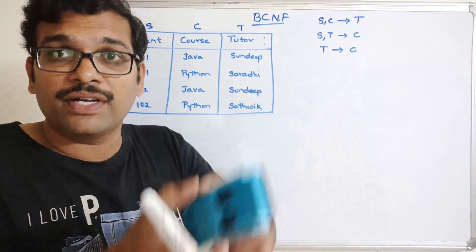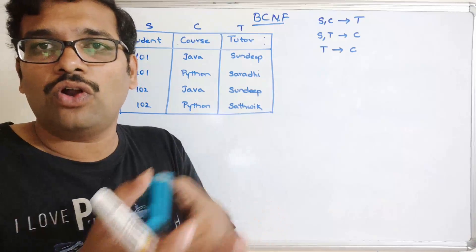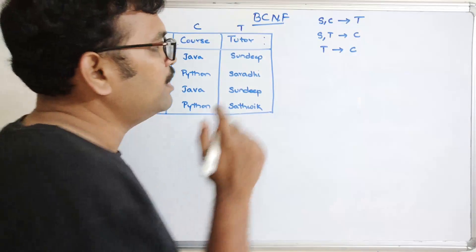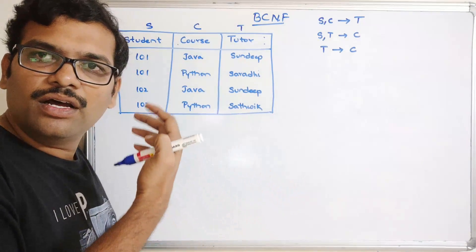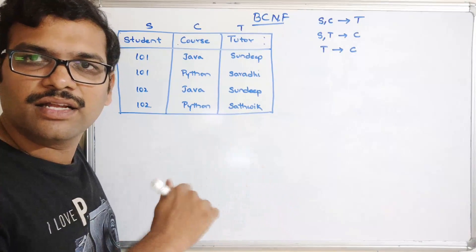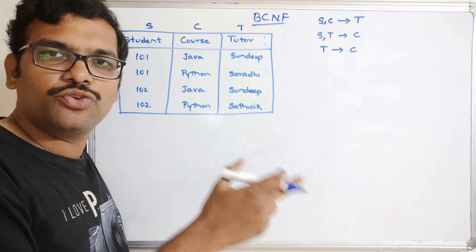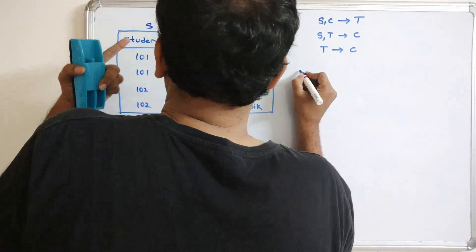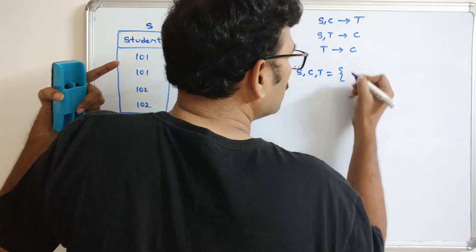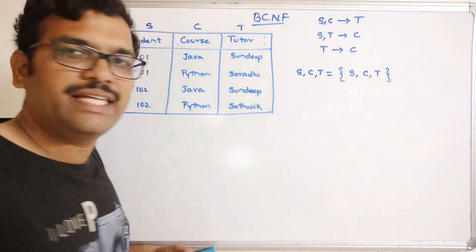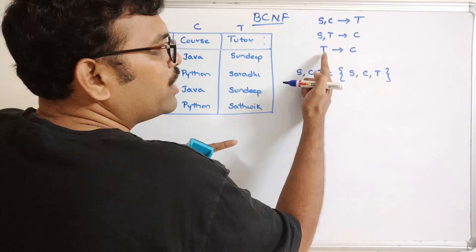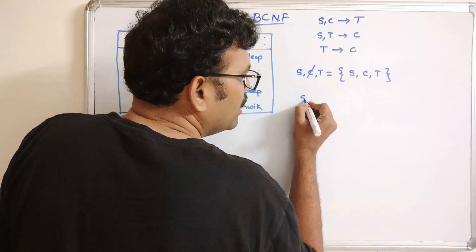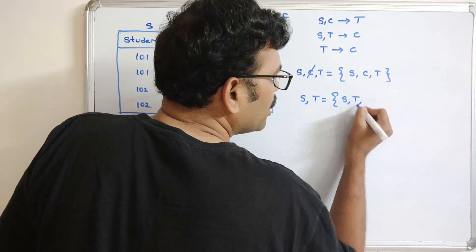For 3NF, for all non-prime attributes there should be no transitive functional dependency. To check this we need to find the candidate keys. Student, Course, Tutor together give all three attributes. From T→C, if we know the tutor we can get the course, so Student and Tutor together can determine all attributes — S,T is a super key.